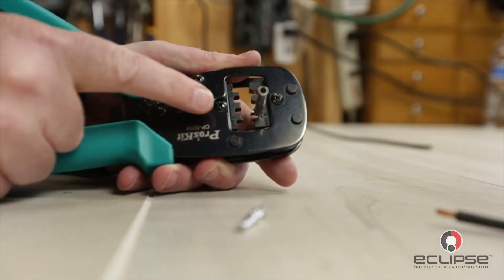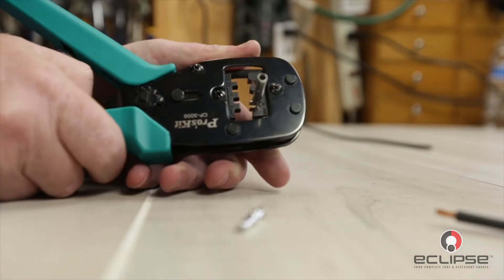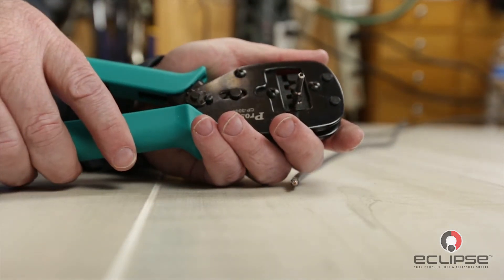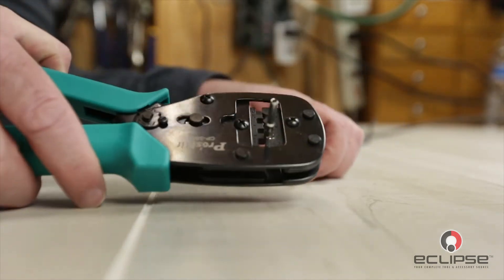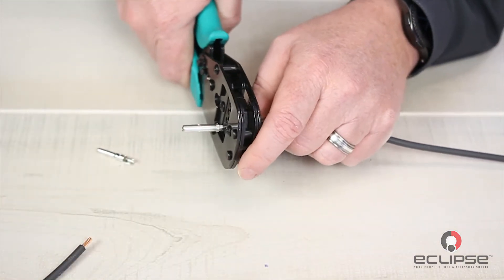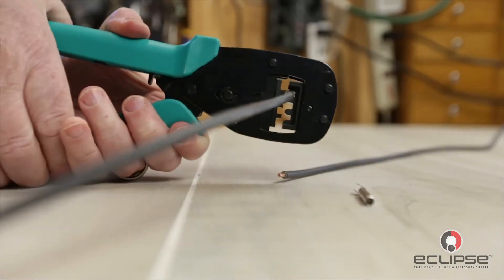Insert the pin into the appropriate wire gauge cavity in the die set. Close the jaws just enough to hold the pin in place without compressing the contacts. Insert the stripped portion of the cable into the pin. Now, make your crimp.